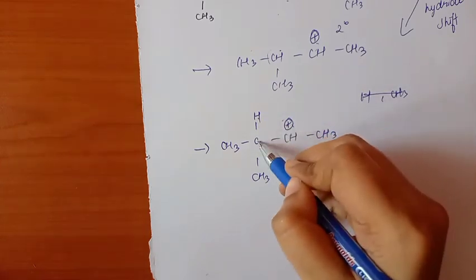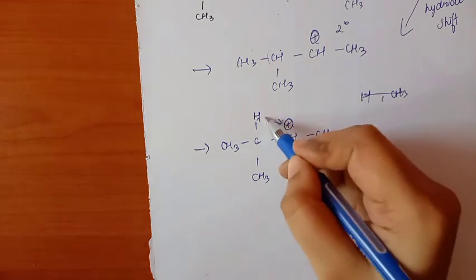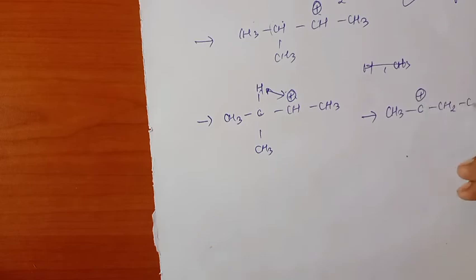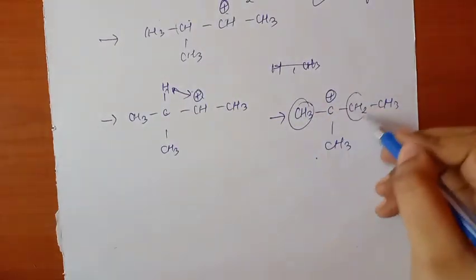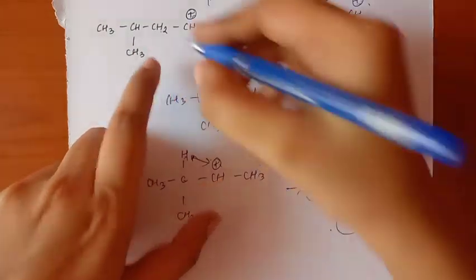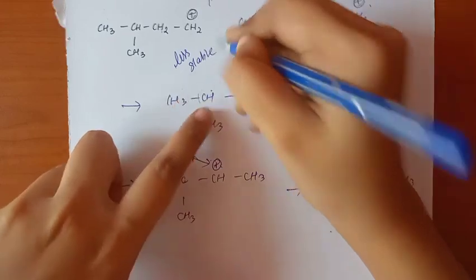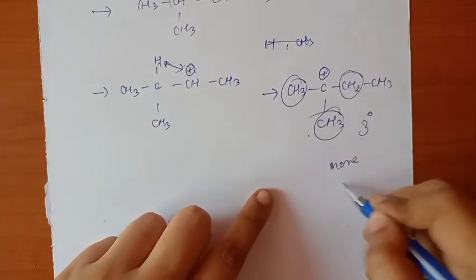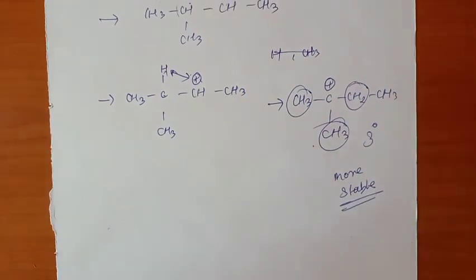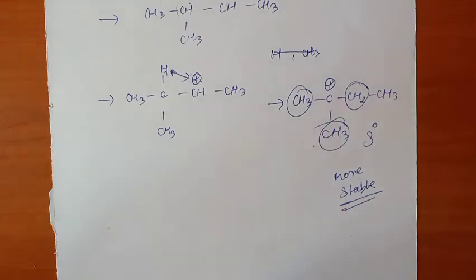If we shift the hydrogen, we get: C⁺, CH₂, CH₃, and CH₃. This carbon is now attached to three carbons, making it a 3° carbocation. So the less stable compound is converted to a more stable compound. This is an important concept — if you have doubts, please comment on the video and I'll provide a solution. Thanks for watching.